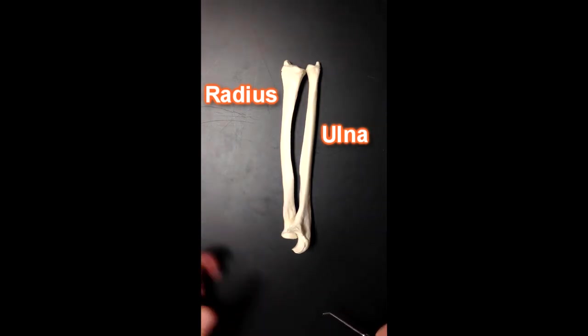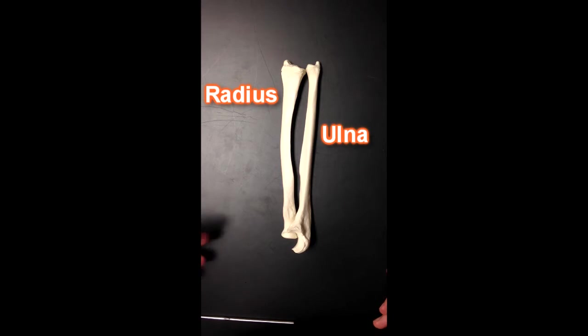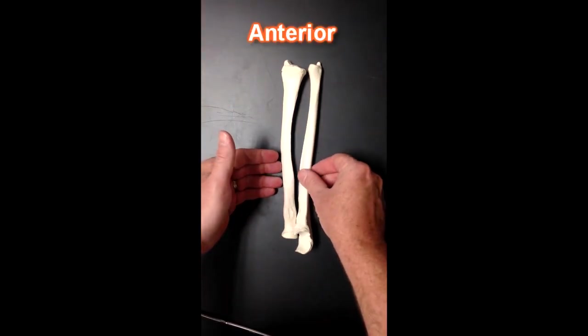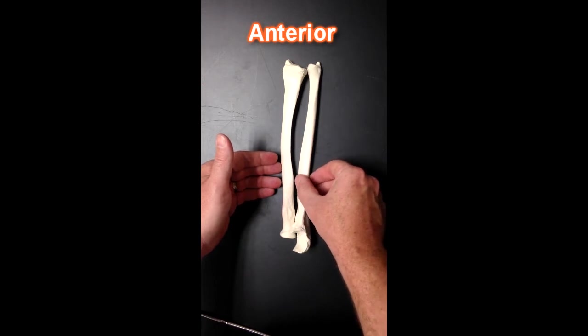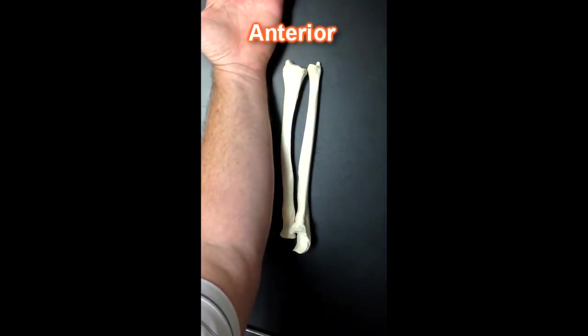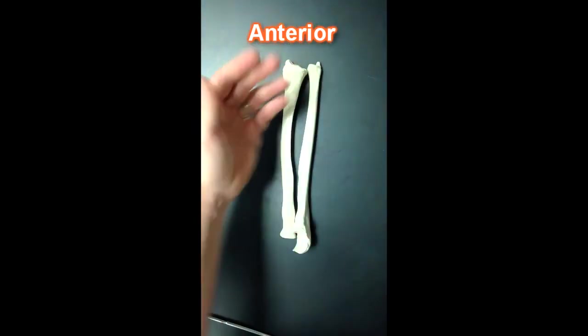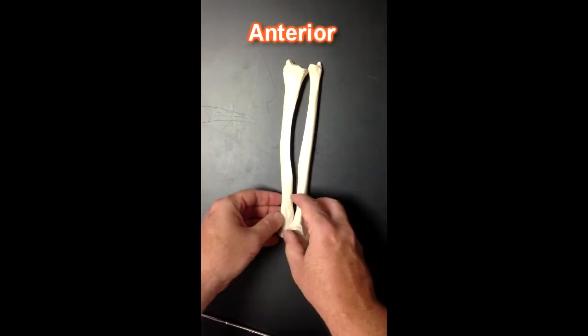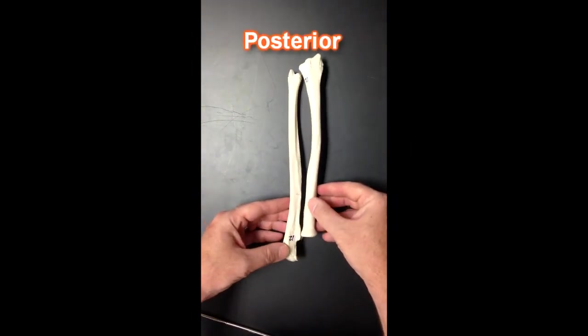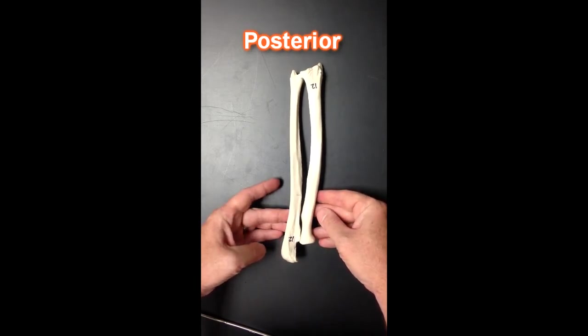So first thing we need to do is distinguish anterior and posterior. I'll show you the sides. The anterior view is what we're looking at right now. So if I were to put my forearm down next to this we would be looking at this view here. These are the anterior views. If I were to turn these over we would see what the posterior view of each one of these bones looks like. This is posterior view.